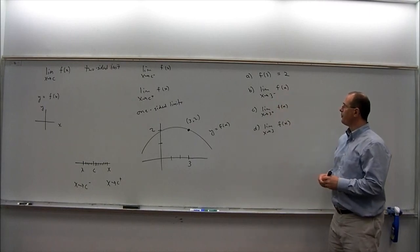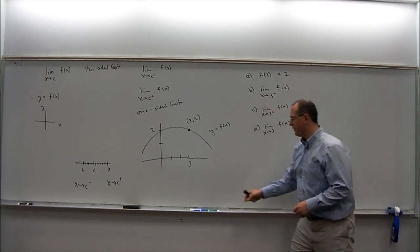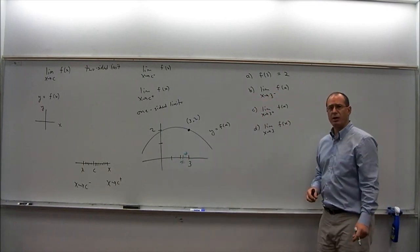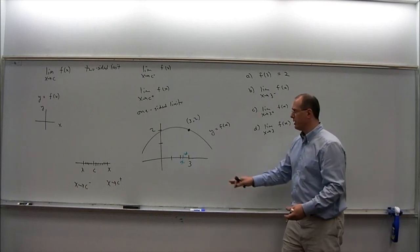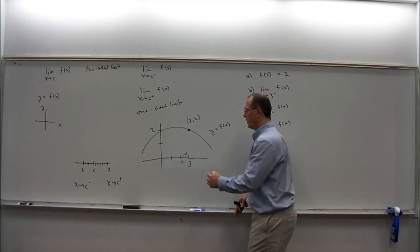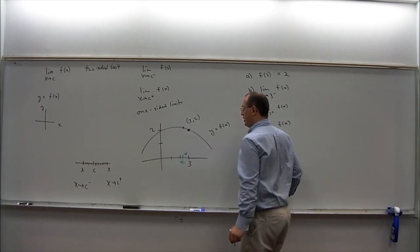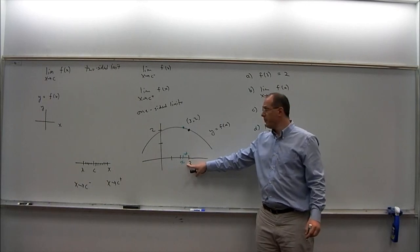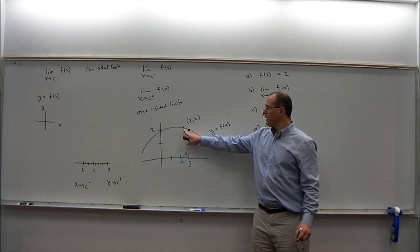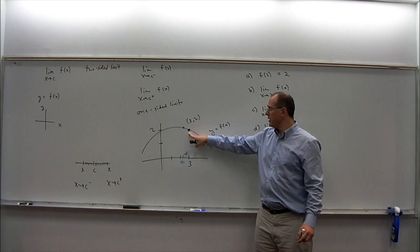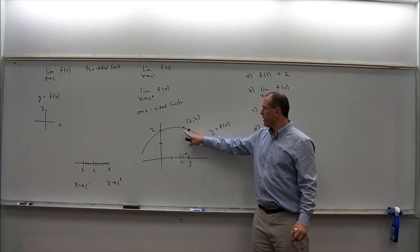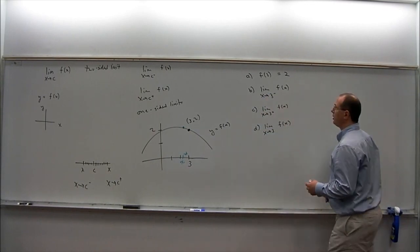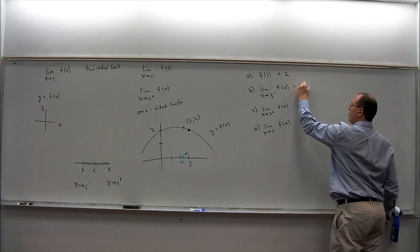Now let's look at the left-side limit. x is approaching three from the left, so maybe x is here, getting closer to three. We're looking at the y-coordinates. If I draw a green dot on the curve, I'm asking what's happening to the height of the green dot as we move the x-coordinate towards three. As the x-coordinate of the green dot moves towards three, the green dot moves down the curve closer and closer to the black dot, so the height approaches two.